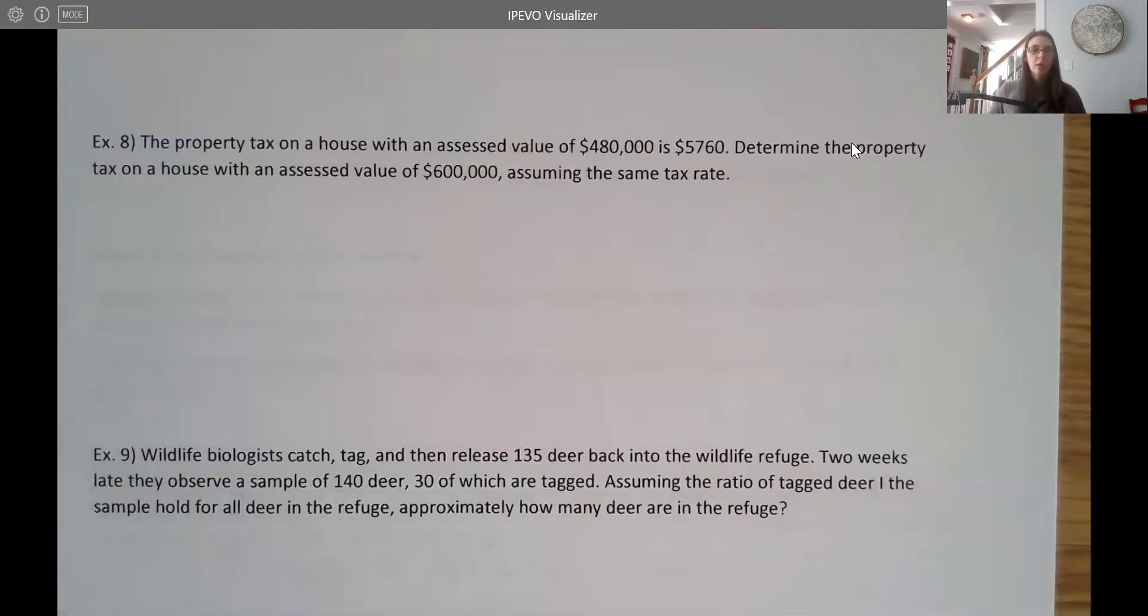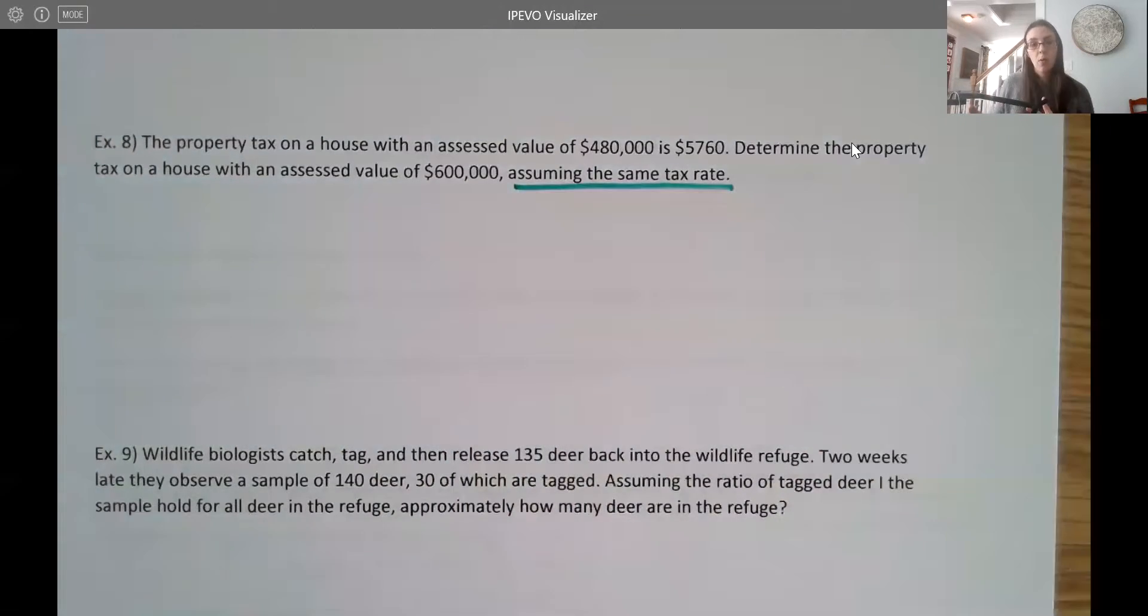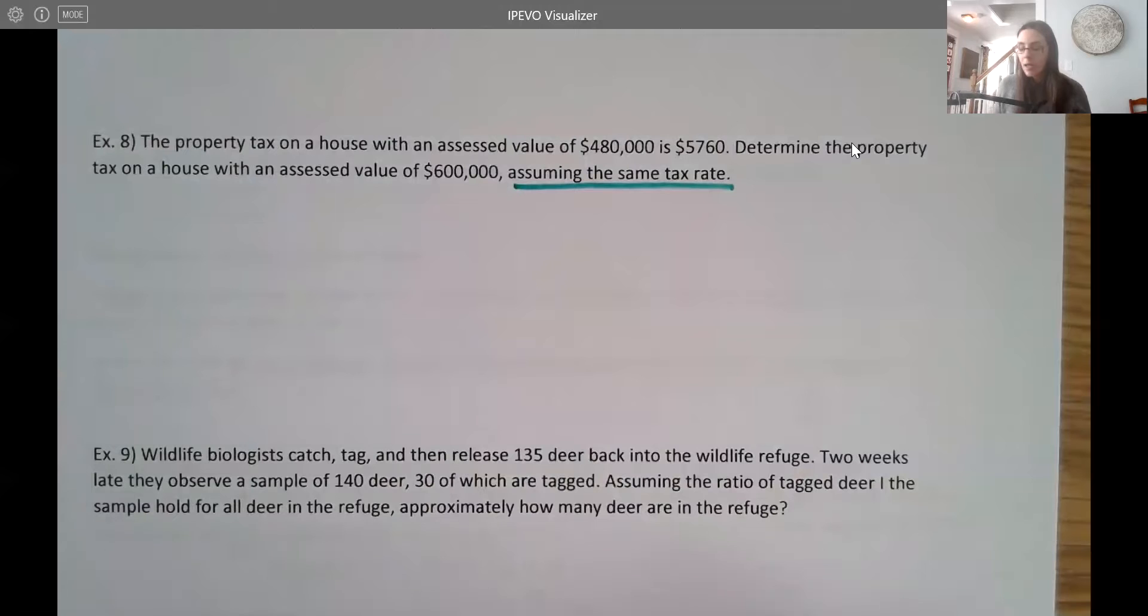All right. So here's what we know. It says the property tax on a house with an assessed value of $480,000 is $5,760. And we want to determine the property tax on a house with an assessed value of $600,000, and we are assuming the same tax rate, which is important, right? So it's the same tax rate for both houses. So they likely are in the same town, neighborhood, something like that. Usually your taxes vary for the town that you live in.